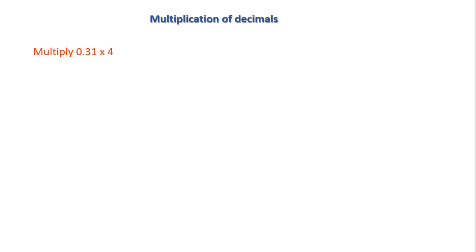First, we will rewrite the given decimal numbers without considering the decimal points. If I rewrite 0.31 without considering the decimal point, it will become 031 into 4.